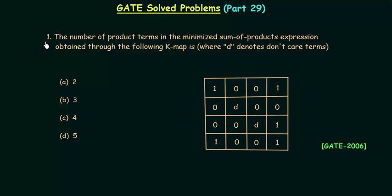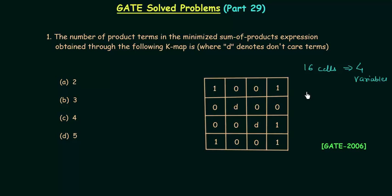In the first problem we need to find the number of product terms in the minimized SOP expression obtained through the given K-map. There are 16 cells in this K-map, which implies there are four variables. The variables are not given in the problem, so we will assume four variables: A, B, C and D, where A is the MSB (most significant bit) and D is the LSB (least significant bit).